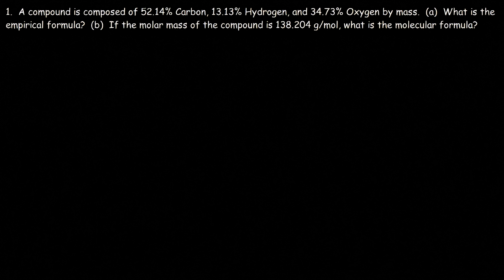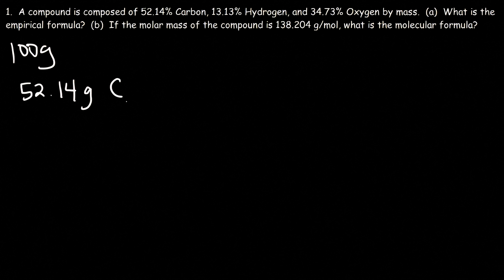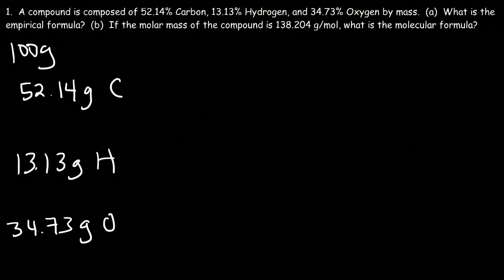A compound is composed of 52.14% carbon, 13.13% hydrogen, and 34.73% oxygen by mass. What is the empirical formula? Now let's say that we have 100 grams of compound. 52.14% of 100 grams is basically 52.14 grams of carbon, 13.13 grams of hydrogen, and 34.73 grams of oxygen. When you're given the percent composition, simply make it grams — base your compound out of 100 grams and you can change the percentage into grams.